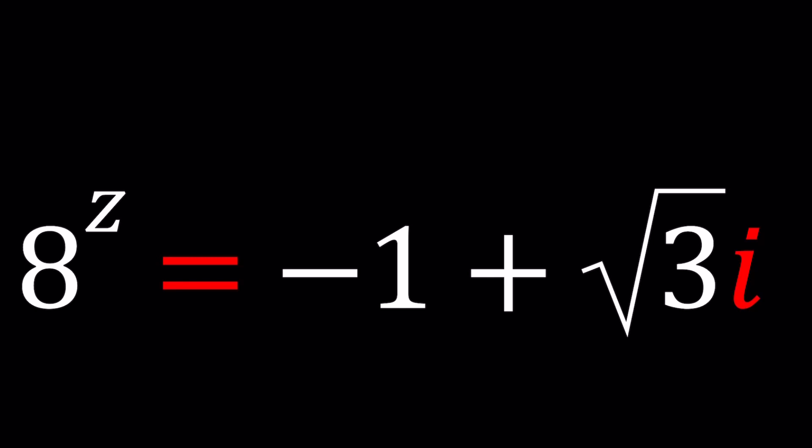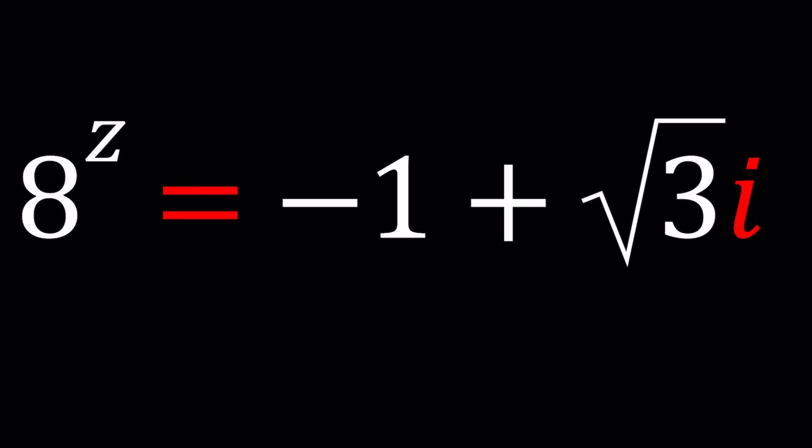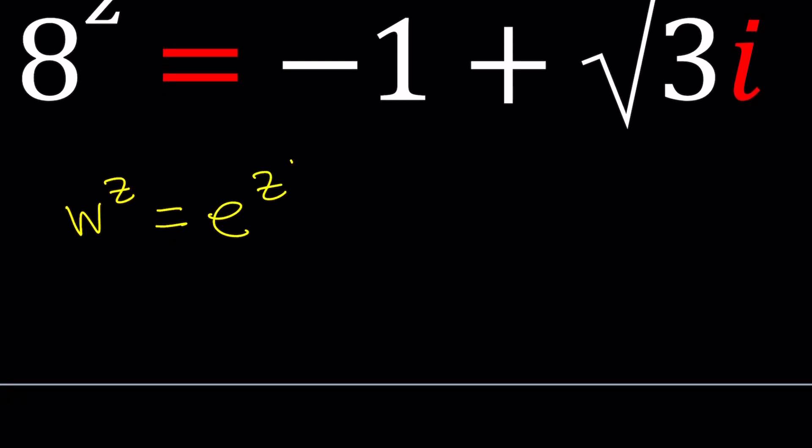So we're going to start by setting 8 to the power z to an exponential. We're going to use Euler's number e at the base. And there's a rule. If you have some complex number to another complex number, which is complex exponentiation, you can express it as e to the power z ln w. And isn't that fun? And obviously ln w is just another complex number. It can be written as ln absolute value of w plus i times the argument of w. Put it all together. You got a formula.